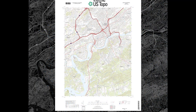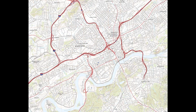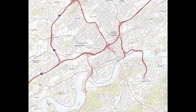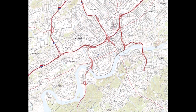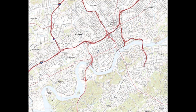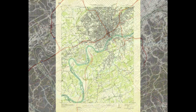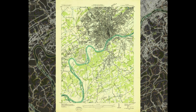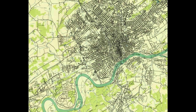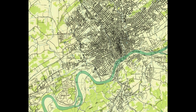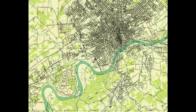This new generation of digital topographic maps is called US Topo, which will be the topic in Lesson 8. Efforts are also being made to expand access to the historical topographic map collection online, which will be discussed in more detail in Lesson 9.